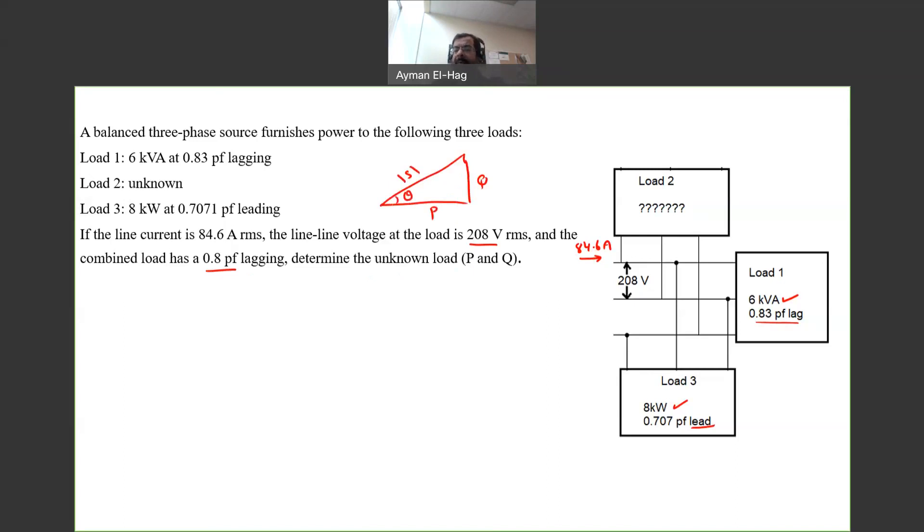These are the four parameters of the power triangle: the magnitude of S, apparent power, P, Q, and the angle. Once I know two values, I can find the rest. We can say that P total equals P1 plus P2 plus P3, and Q total equals Q1 plus Q2 plus Q3.